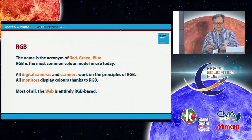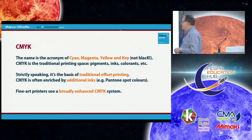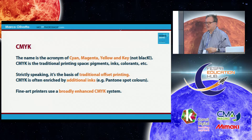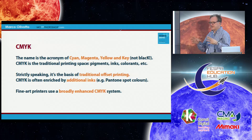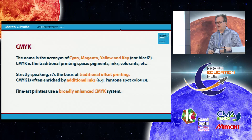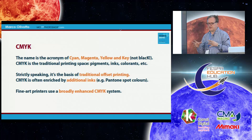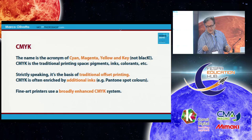There is no CMYK on the web — it's a different world from printing. CMYK is the acronym of cyan, magenta, yellow, and key. Many people think the K comes from the last letter of black, but that's not true — black is the key plate on which every other plate is registered. CMYK is a traditional printing space using pigments, inks, or colorants. The four process inks are the basis for traditional offset printing.